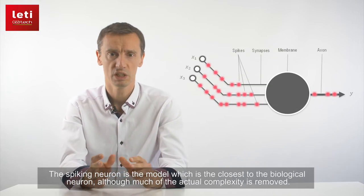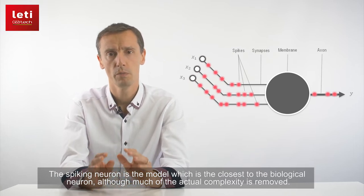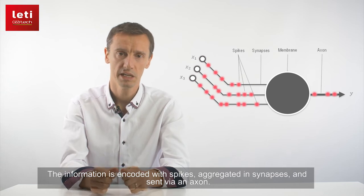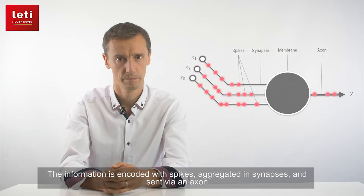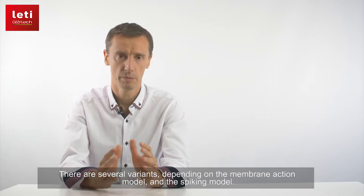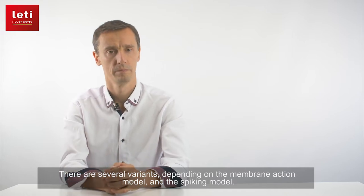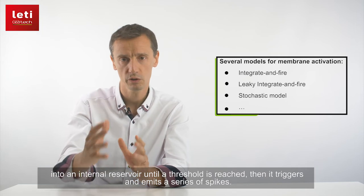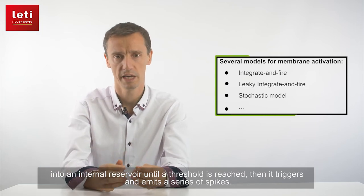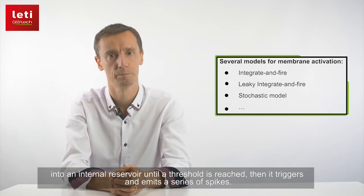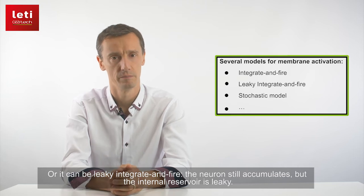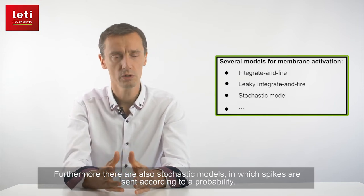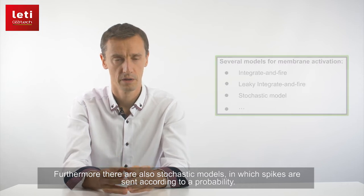The spiking neuron is the model which is the closest to the biological neuron, although much of the actual complexity is removed. The information is encoded with spikes, aggregated in synapses and sent via an axon. There are several variants depending on the membrane action model and the spiking model. The membrane can be integrated and fired, which means that the neuron accumulates the spikes into an internal reservoir until a threshold is reached, then it triggers and emits a series of spikes. Or it can be leaky integrated and fired — the neuron still accumulates, but the internal reservoir is leaky. Furthermore, there are also stochastic models in which spikes are sent according to a probability. There are many other variants.